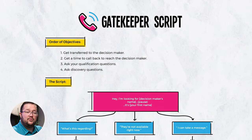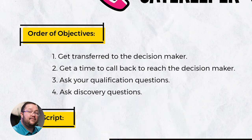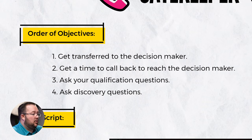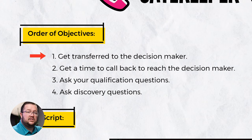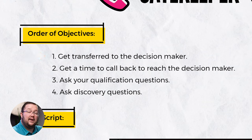The first thing you need to know about talking to a gatekeeper is what your order of objectives are, and I have it very clearly outlined here. So let's go through it. This is the order of objectives you should be following when talking to a gatekeeper. First: get transferred to the decision maker. Ultimately, that's the person you want to speak to — that should be your number one priority and the first thing that you do.